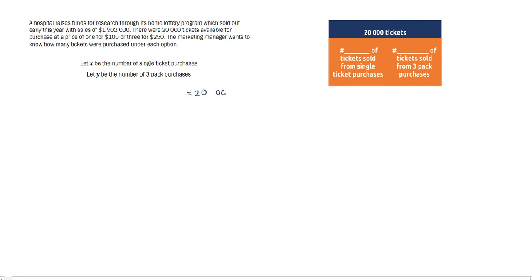If we consider first the number of tickets, we know that there's a total of 20,000 tickets that were sold, and that'll comprise all the single ticket purchases which will contribute one ticket per purchase, plus all of the three-pack purchases. Each of those purchases will contribute three tickets. There are many positive integer solutions that could satisfy this equation, so we need more information to get a single solution.